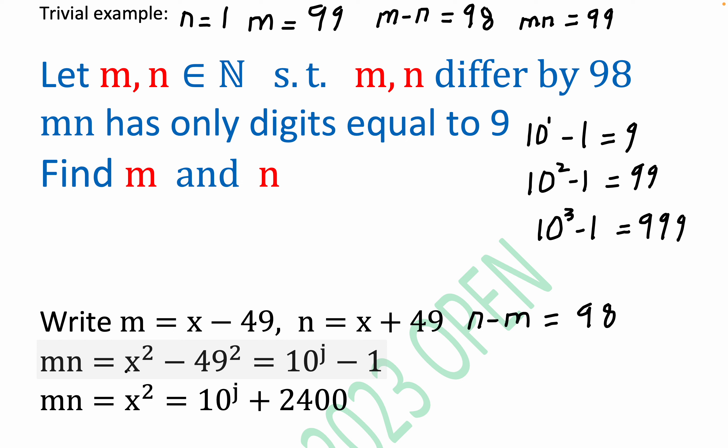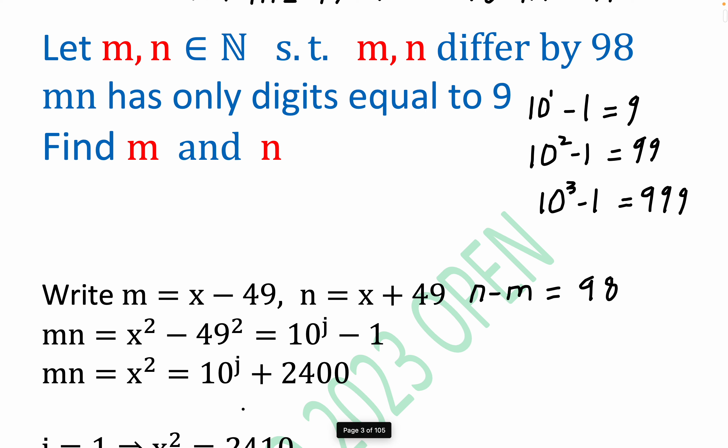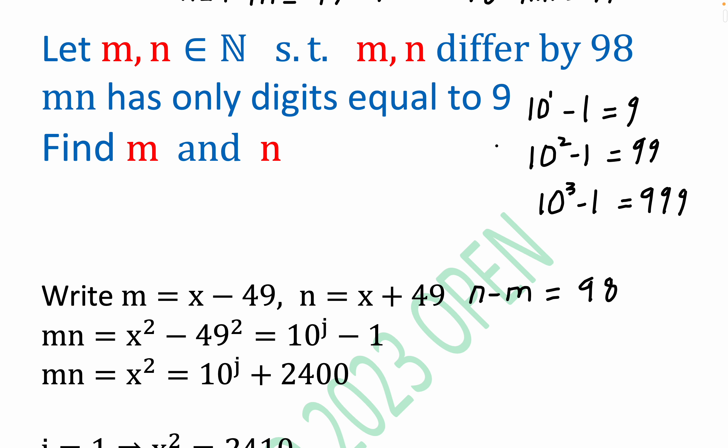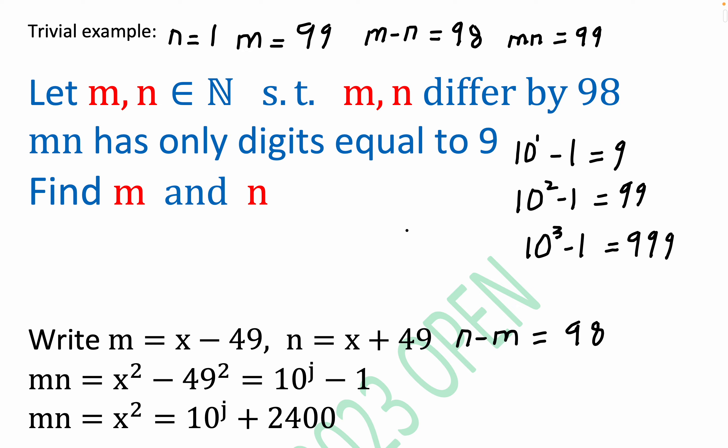The middle terms cancel out. And so you can rewrite this as x squared equal 10 to the j plus 2,400, which you'll notice is a multiple of 100, not 10. So we got this circumstance here where we can just go through and check the j's and see if we get another circumstance that's similar to this two-digit situation that we discovered up here trivially.